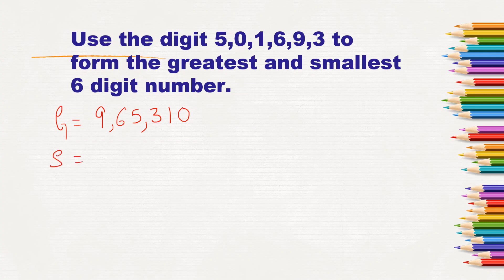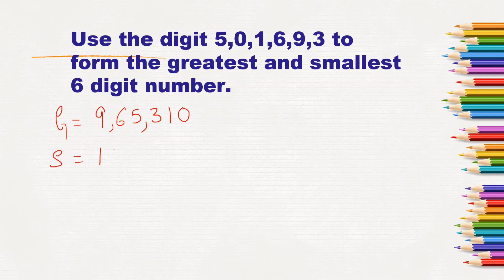To form the smallest number, arrange from smallest to greatest, but 0 cannot be placed first — if we write 0 first, it becomes a 5-digit number. Zero before a number has no value, zero after a number does. So we write 1 first, then 0 at the second place, followed by 3, 5, 6, 9. The smallest 6-digit number is 1,03,569.